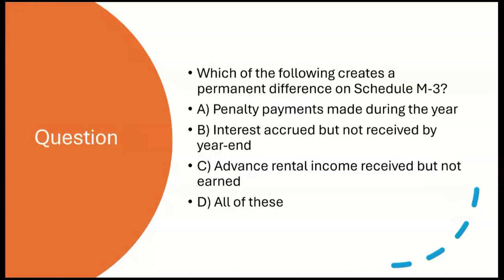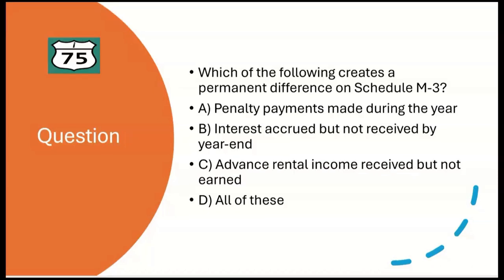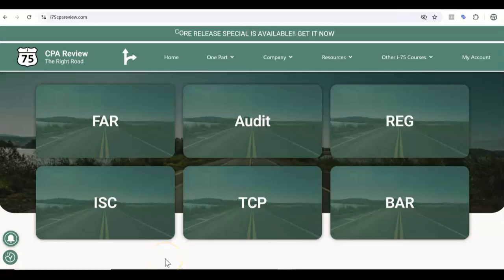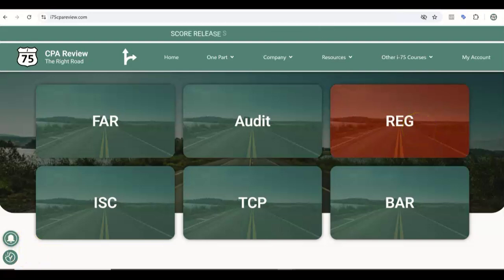Which of the following creates a permanent difference on Schedule M-3? A: penalty payments made during the year. B: interest accrued but not received by year-end. C: advanced rental income received but not earned. D: all of these. We're looking for a permanent difference — leave me the answer in the community or comments section. If you found this video on M-3 helpful and want to see more videos like it, go to i75cpareview.com and get yourself on the right road to passing REG. Get yourself on I-75 with me, Darius Clark, because the right teacher makes all the difference.